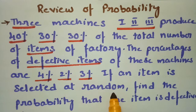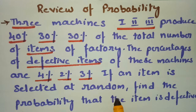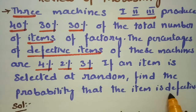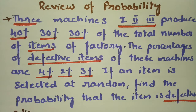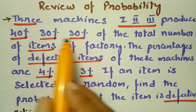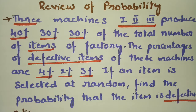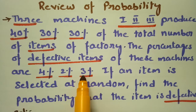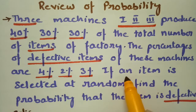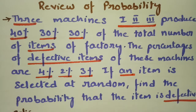If an item is selected at random from all these items, find the probability that the item is defective. If the question is very clear, then you will get an answer. Three machines produce 40%, 30%, and 30% of items of a factory, and the percentages of defective items by machine 1 is 4%, machine 2 is 2%, and machine 3 is 3%. Find the probability that the item is defective.